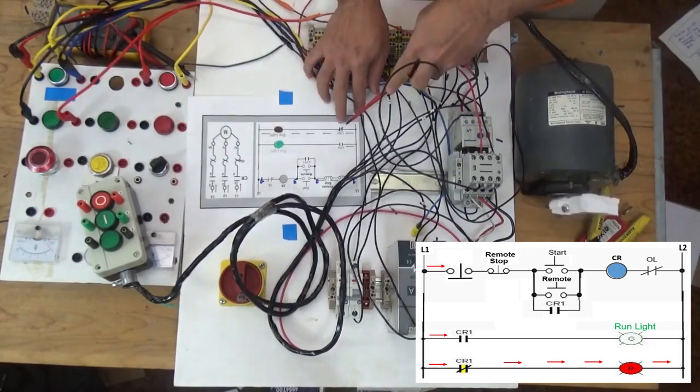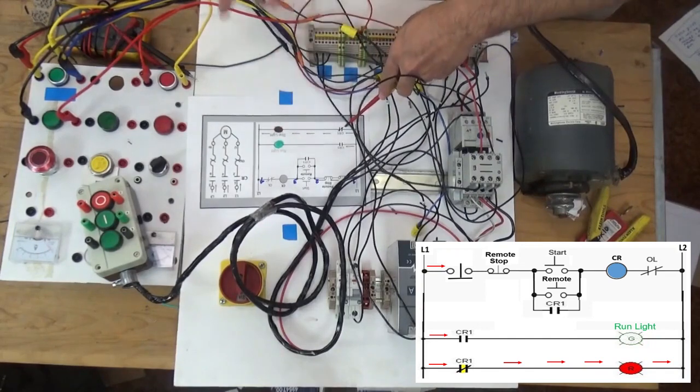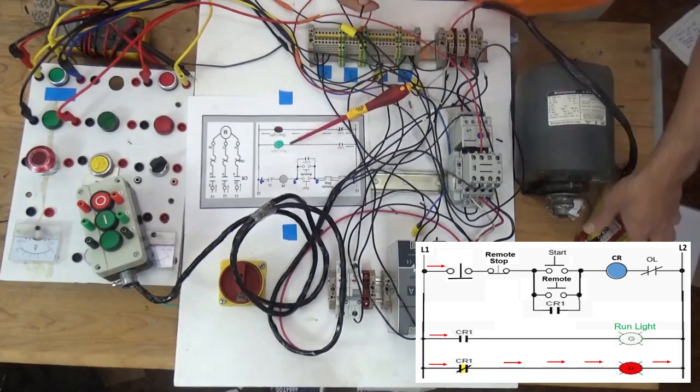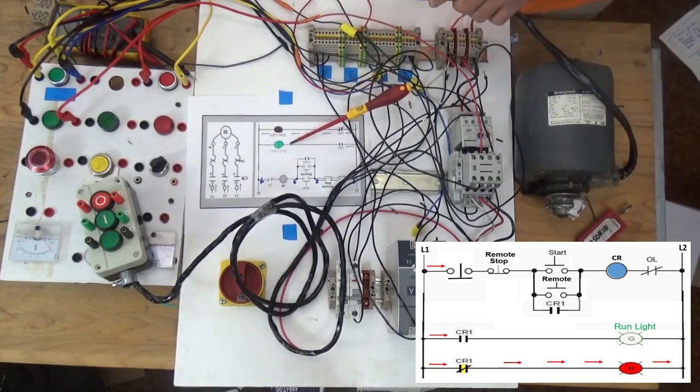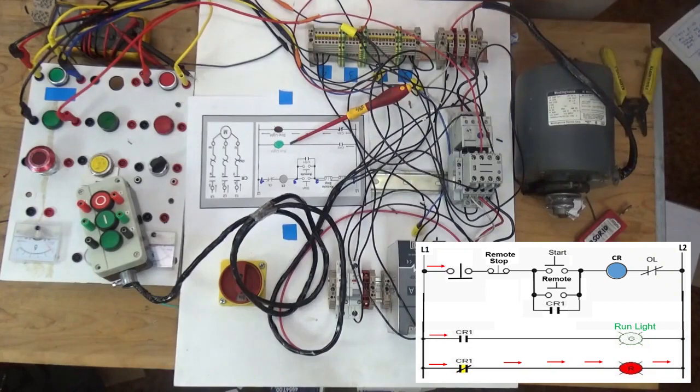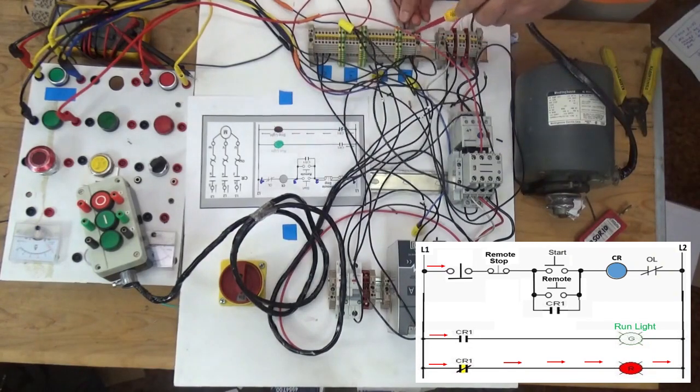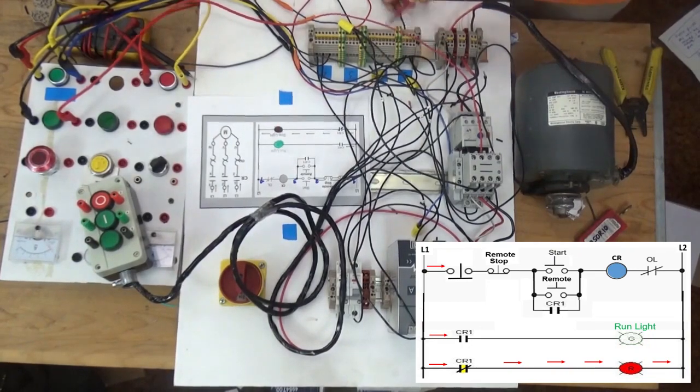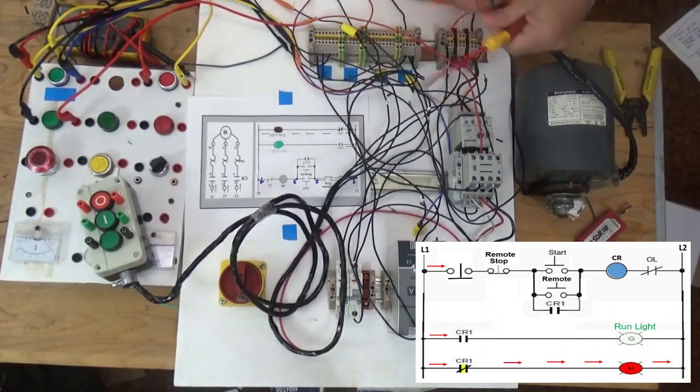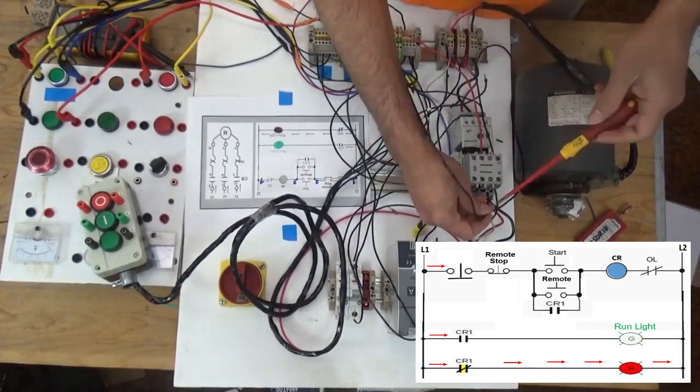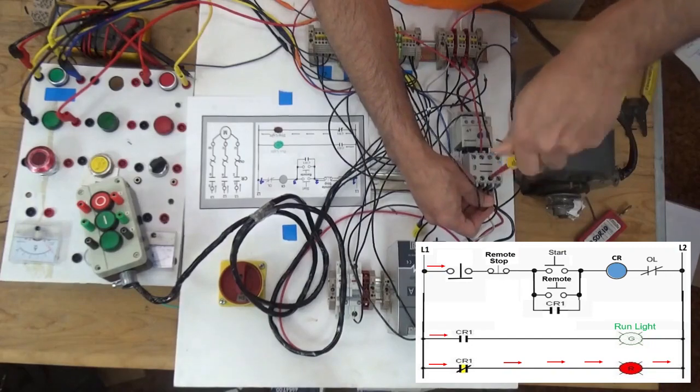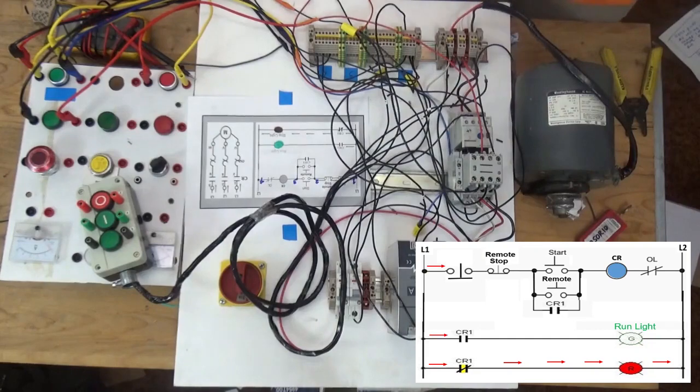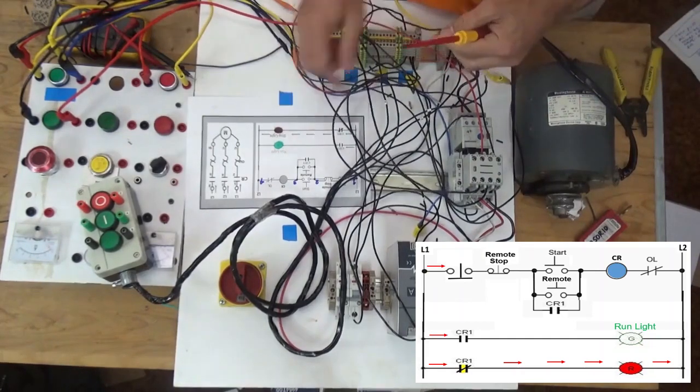Next is we are going to connect normally closed for our stop indication light. From line one going to our normally closed. From our normally closed going to lights.